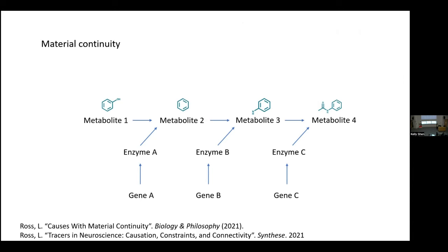Second distinction within causation: material continuity. Material continuity refers to a case where a cause is transmitting material to its effect. A nice example is a metabolic pathway — material from metabolite one moves into metabolite two, much of it moving into three and four. Metabolic pathways are often analogized to factory assembly lines: you start with a car frame, add the doors, wheels, bend some parts, and get a car. Similarly, you start with metabolite one, add transformations, and at the end get the metabolite of interest.